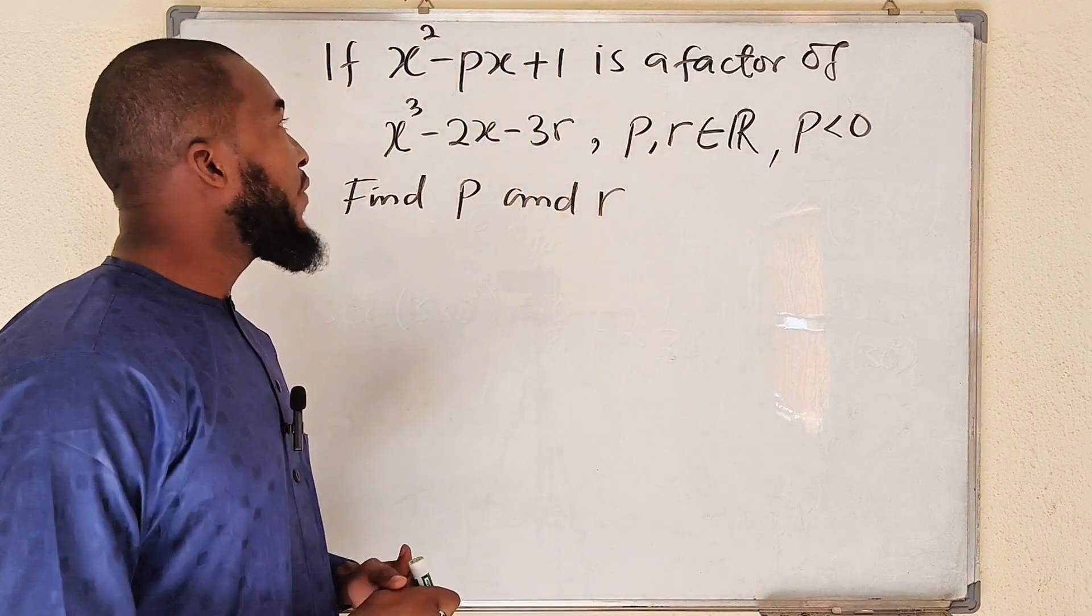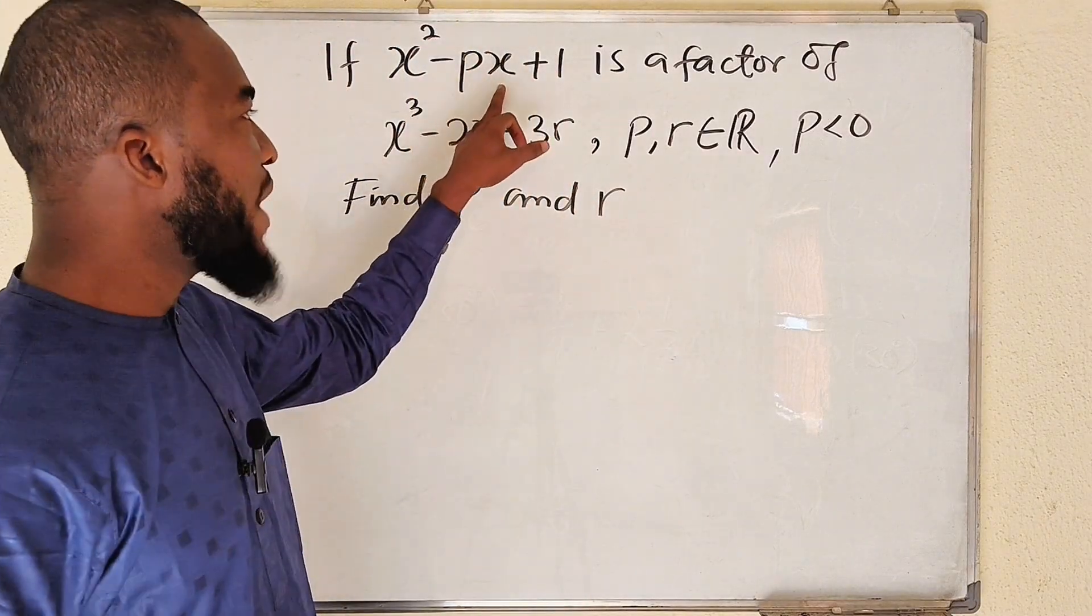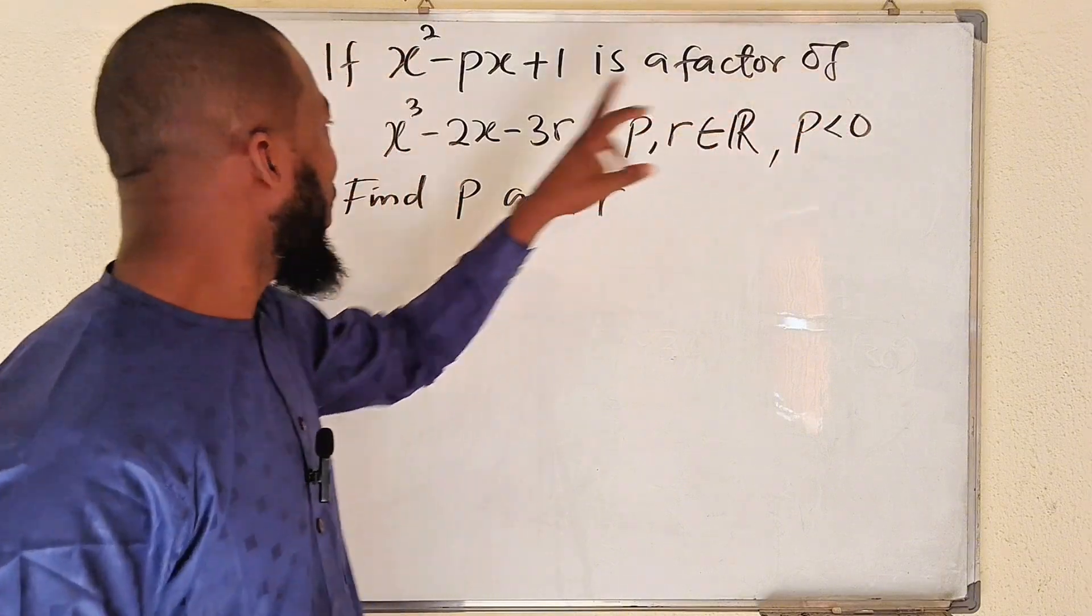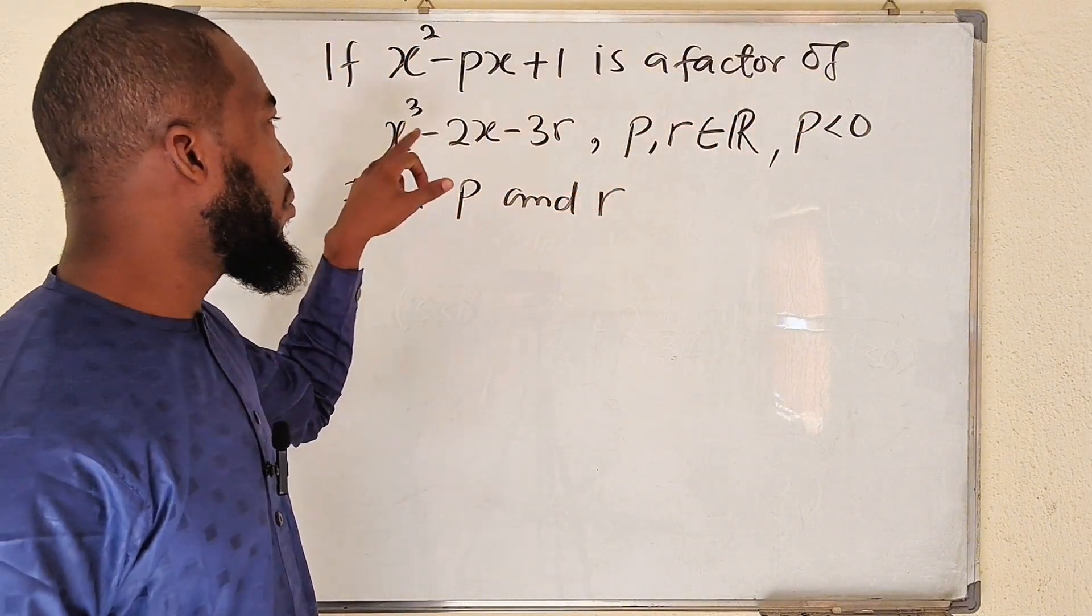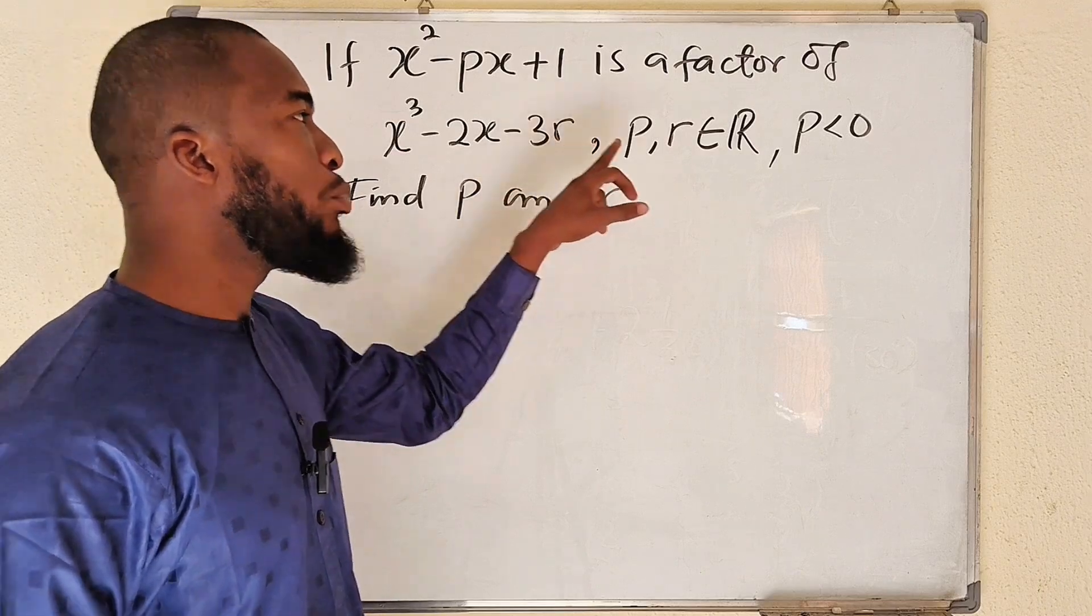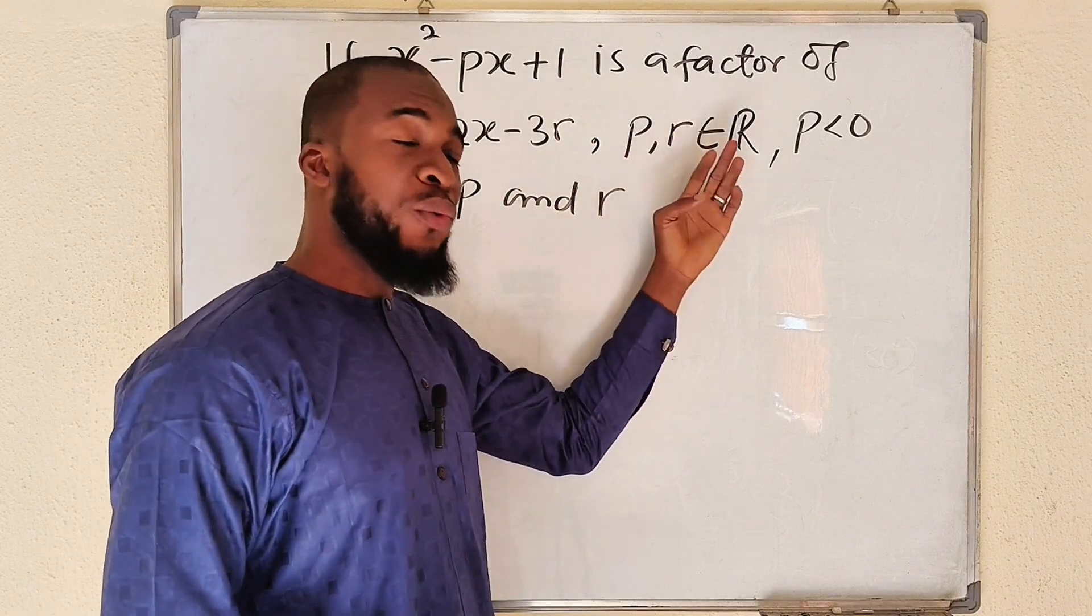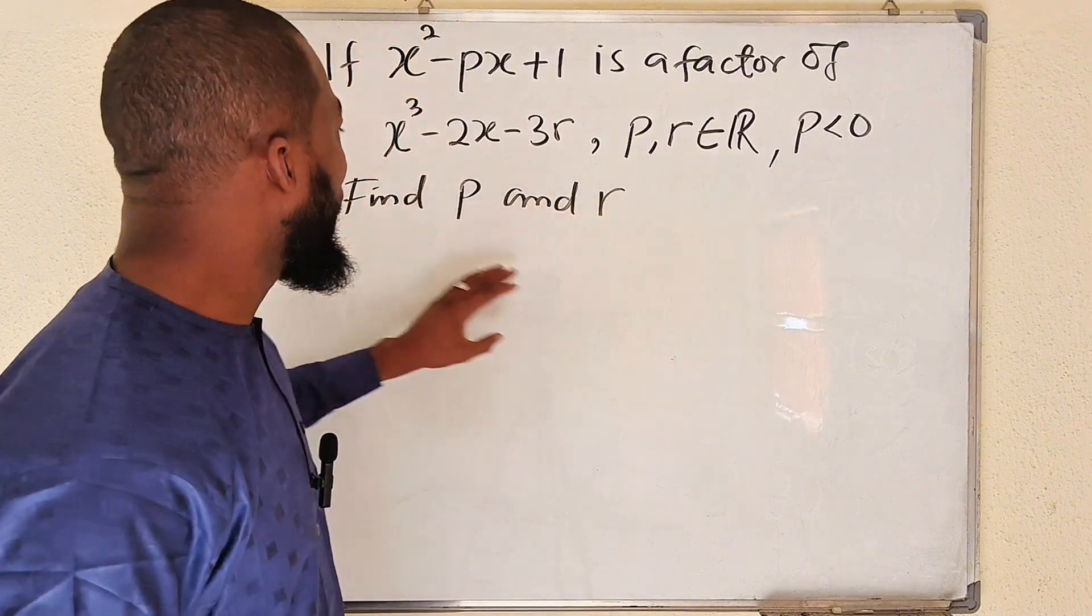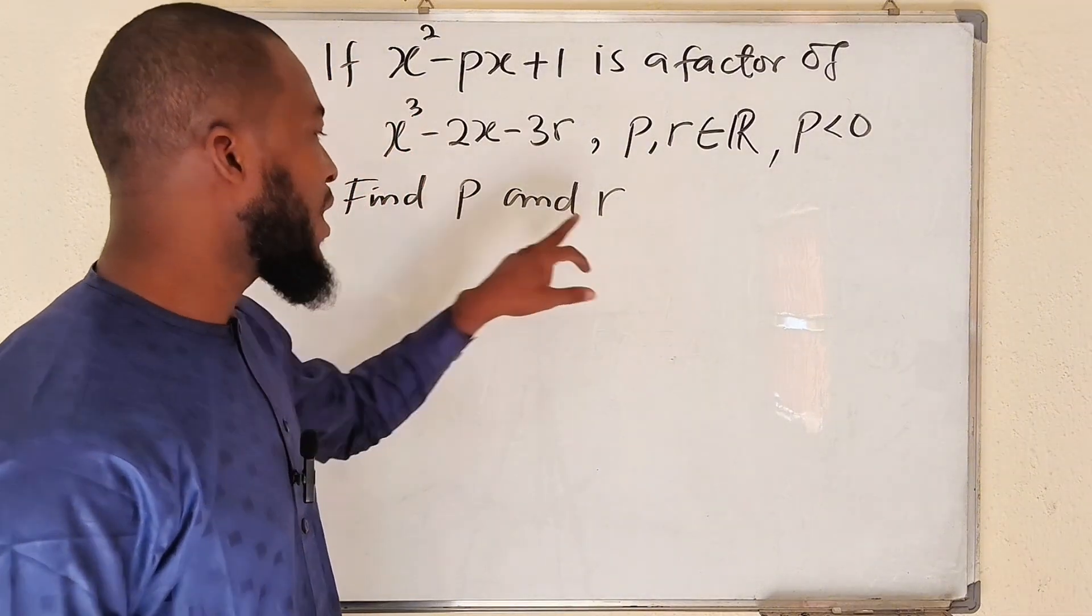The question reads: if x squared minus px plus 1 is a factor of x cubed minus 2x minus 3r, for which p and r are all real numbers where p is a negative number, we are asked to find the value of p and r.